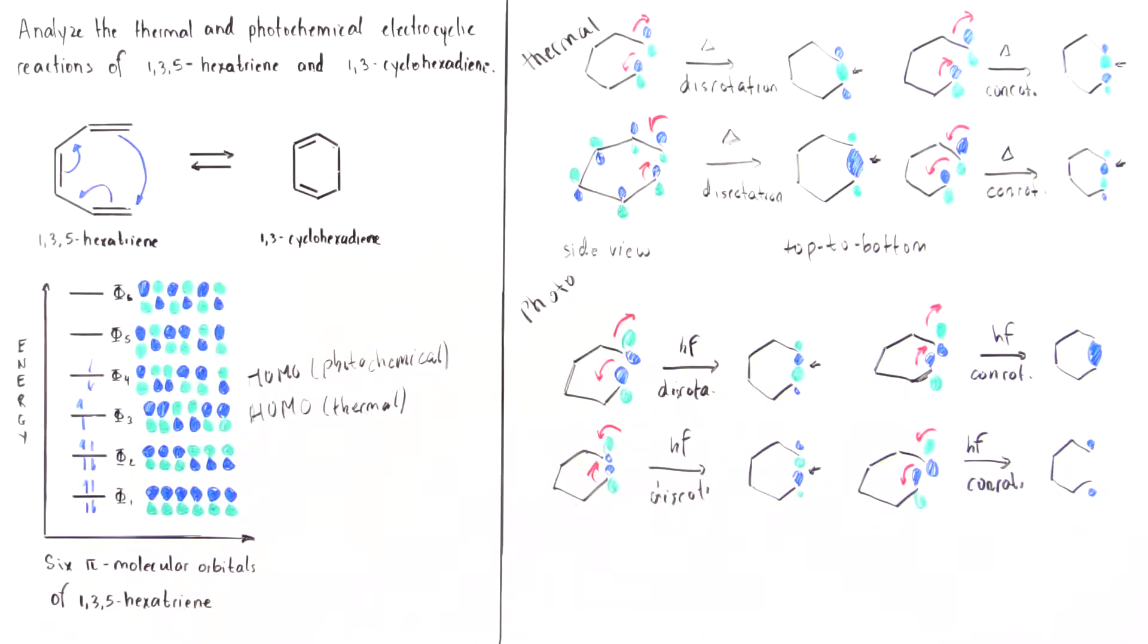And here we have the green lobes, so we have the positive. And in both cases, this means it's a bonding interaction.